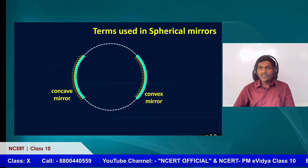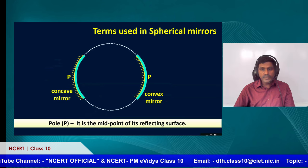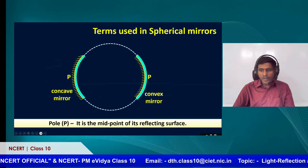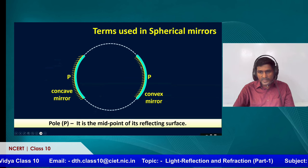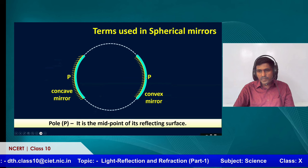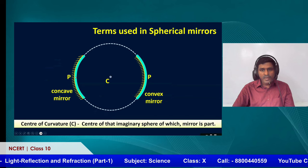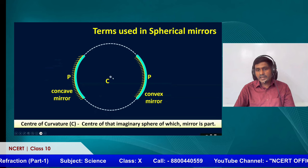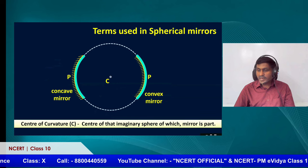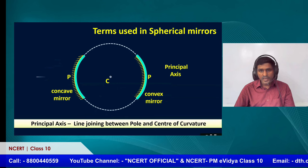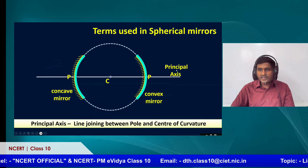Now let us look at some terms used in spherical mirrors. The pole is the midpoint of the reflecting surface. For both convex and concave mirrors, this center point is called the pole. If you consider the sphere, the center of that sphere is called the center of curvature — it is the center of the imaginary sphere of which the mirror is a part. If you connect the pole and the center of curvature, you get a straight line called the principal axis.